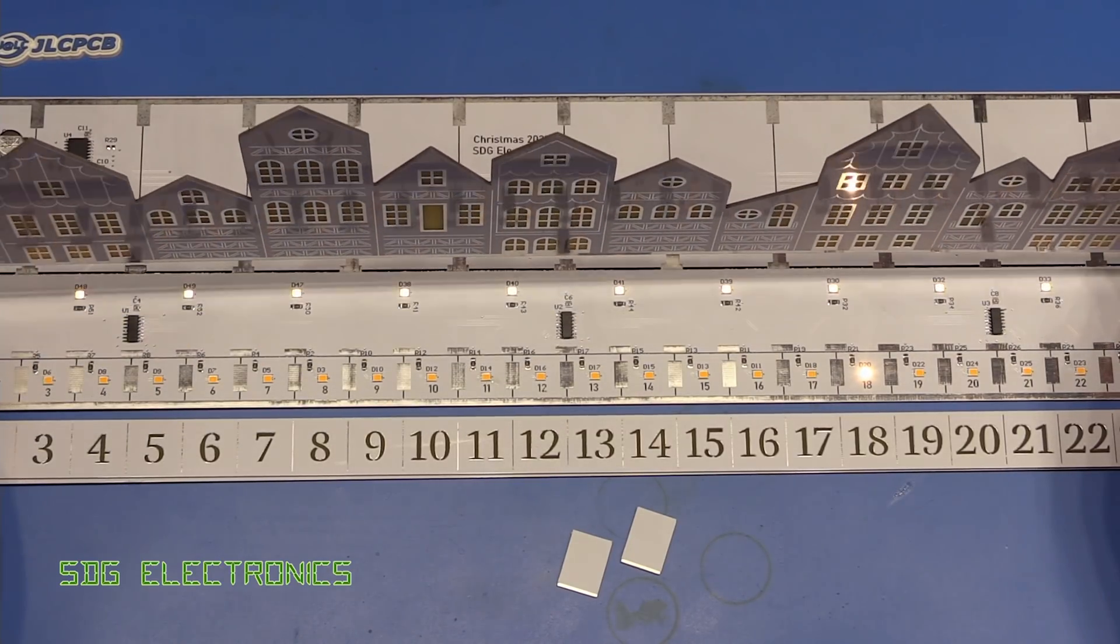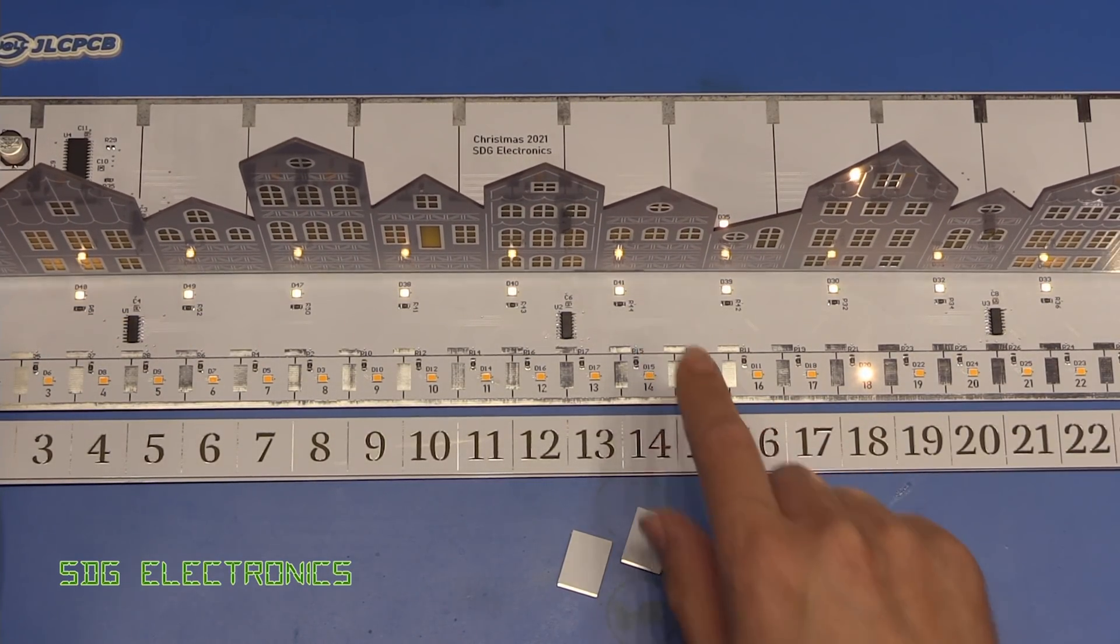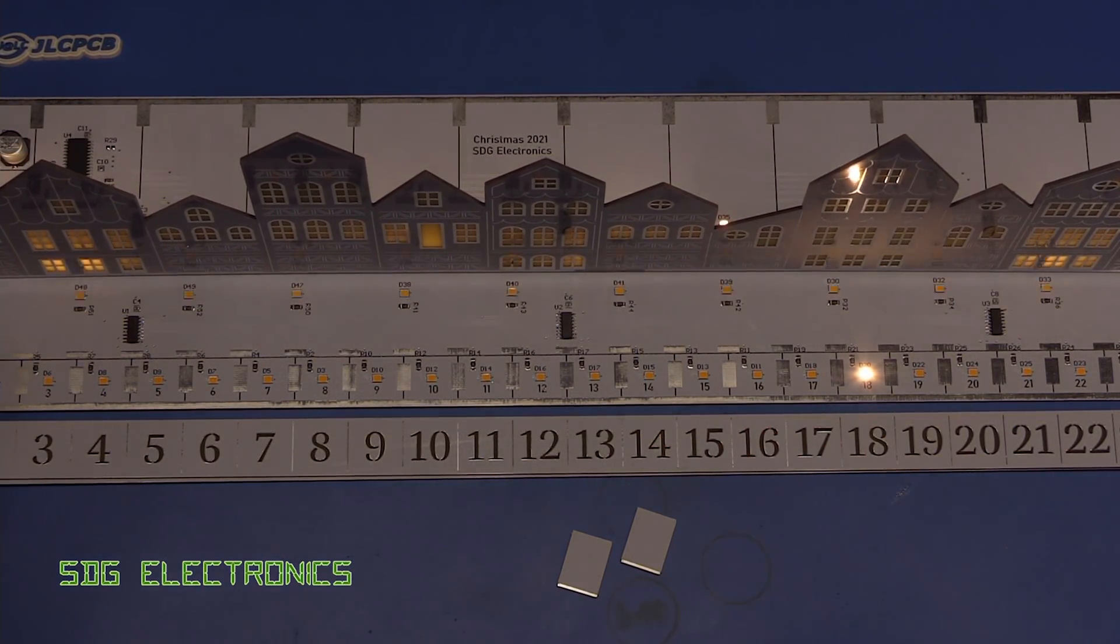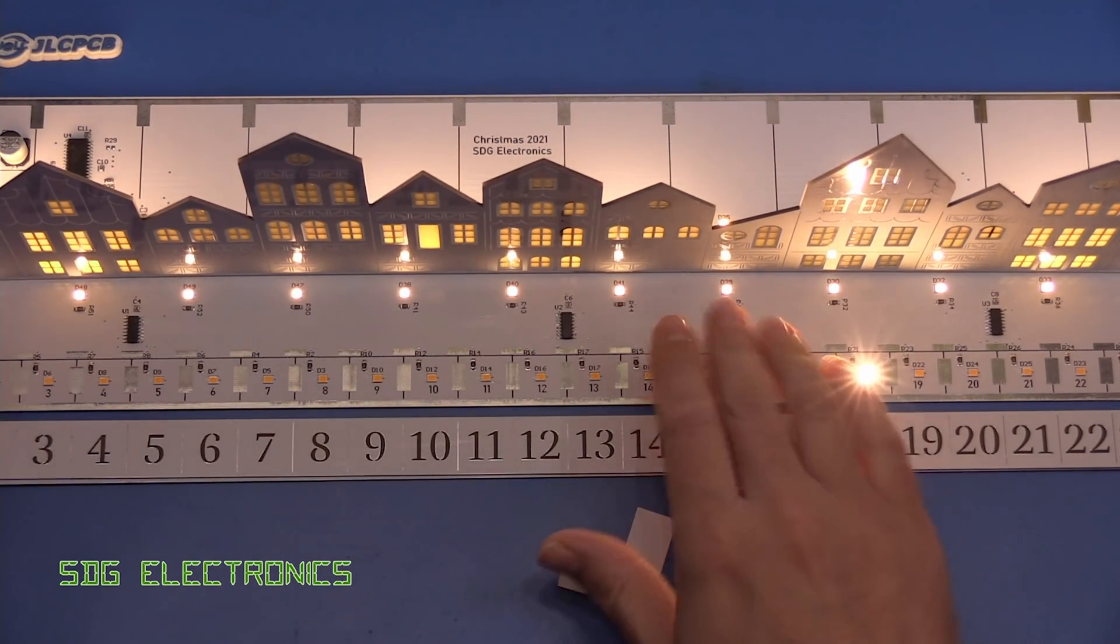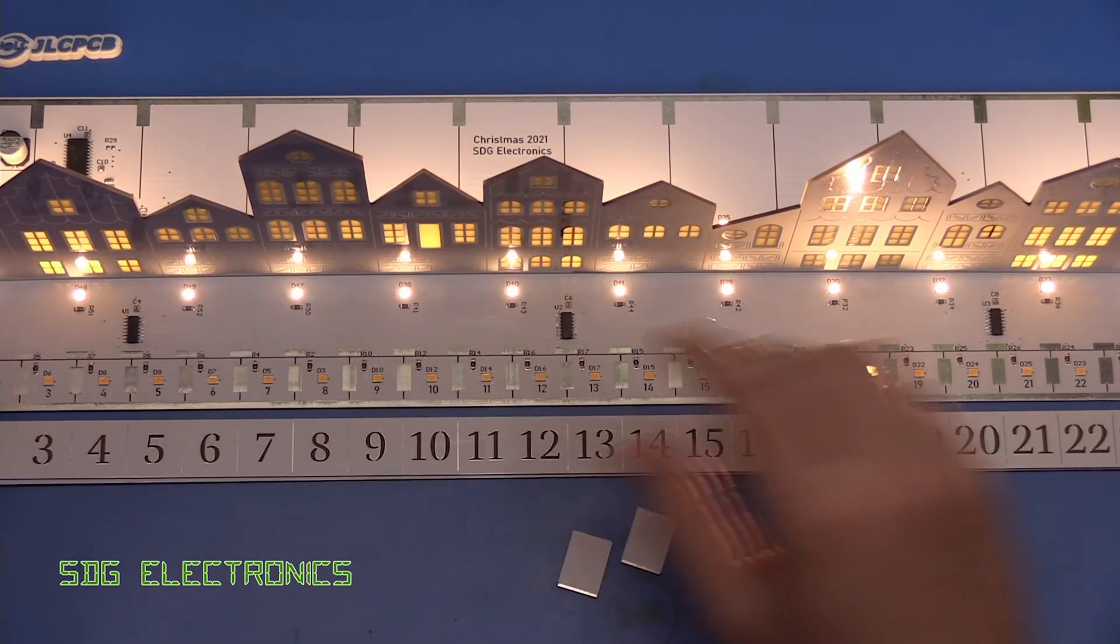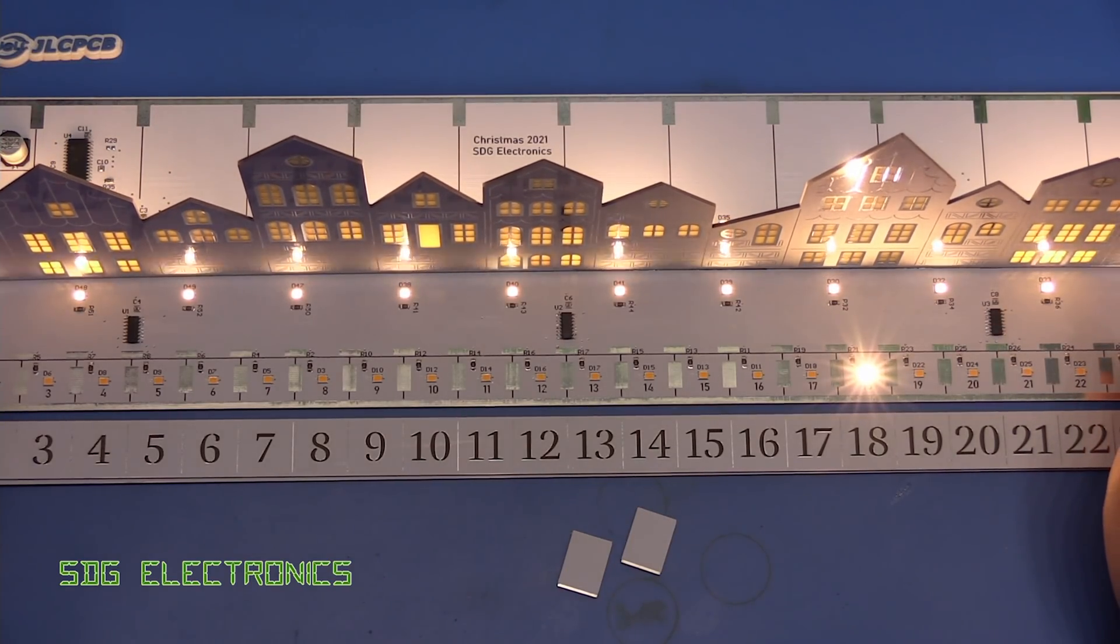We've got these LEDs at the front here which are PWM'd. They're interfering with the camera slightly but they just illuminate the front of the houses so that you can see what's going on at night.